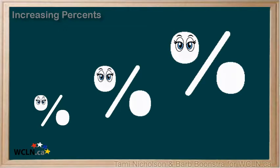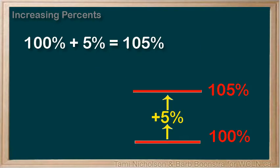Let's talk about increasing percents. If something has increased by 5%, then it is greater than 100%. It's 100 plus 5, or 105% of what it was.